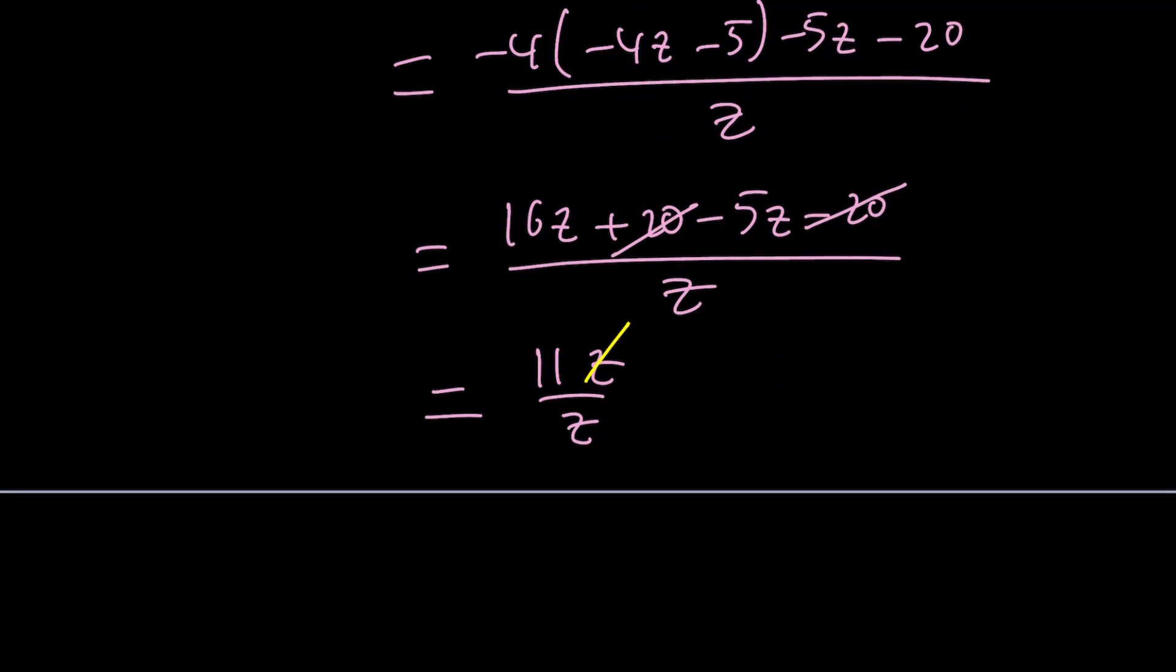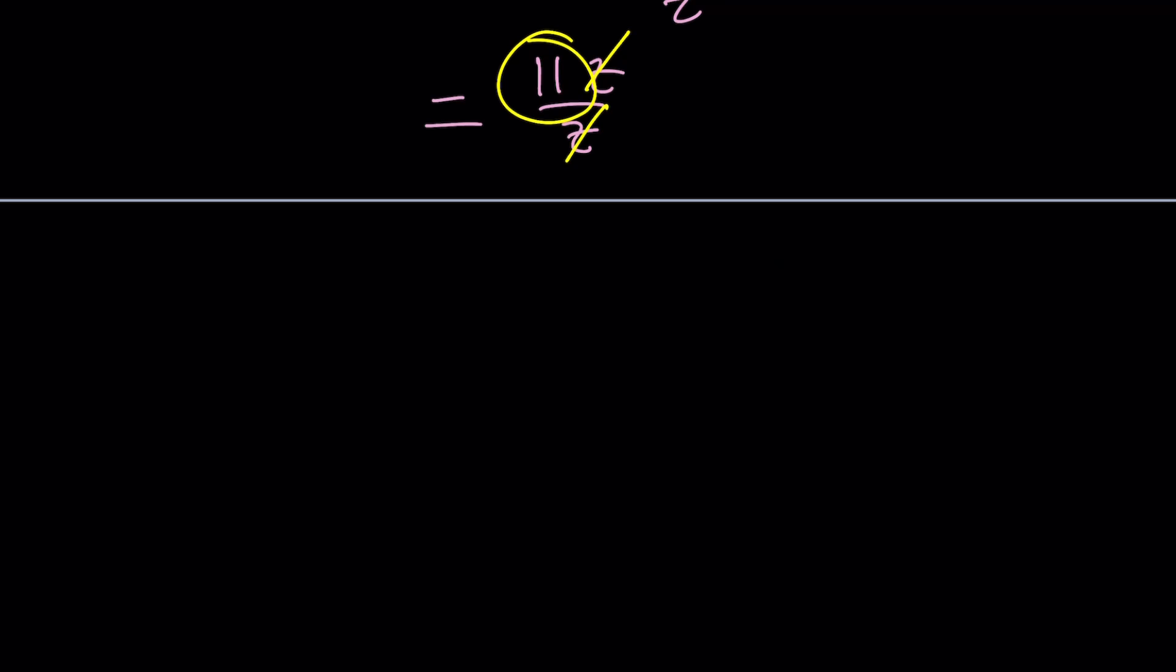Z cancels out, leaving us with the answer, which is 11 one more time. Right? This is the end of the second method. Are you ready for the third one? Because the third method is awesome. All right. Let's see how this goes.